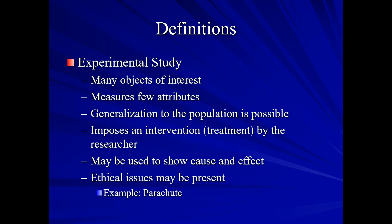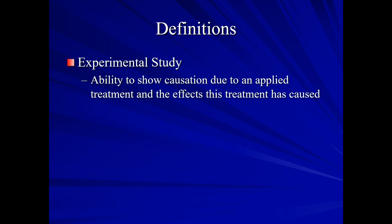Now our experimental study, on the other hand. We have many objects of interest. We measure few attributes. However generalization to the population is possible because we impose an intervention, a treatment by a researcher. We can use this to show cause and effect. There are ethical issues which may be present with our experimental studies, such as: Suppose that we have created a new type of parachute cord and we want to test this to see if it's as strong as a standard parachute cord. Well it's definitely unethical to take two people up in a plane, 12,000 feet, one with our new cord and one with the standard cord and push them out of the plane and say good luck. And so other types of methods would be used to try to evaluate the strength of this cord. Our experimental study allows for the ability to show causation due to an applied treatment and the effects this treatment has caused.